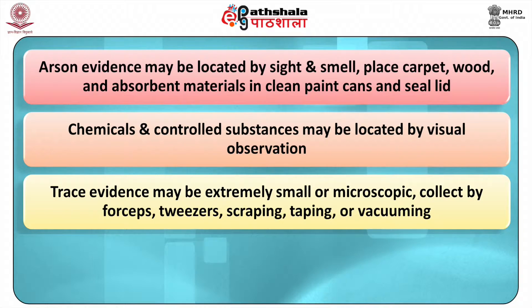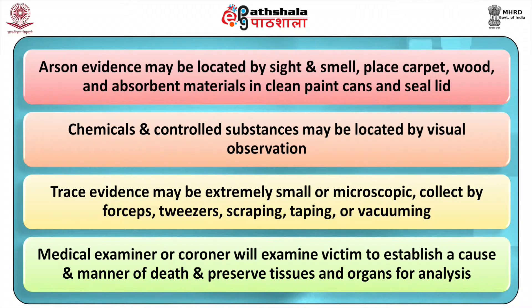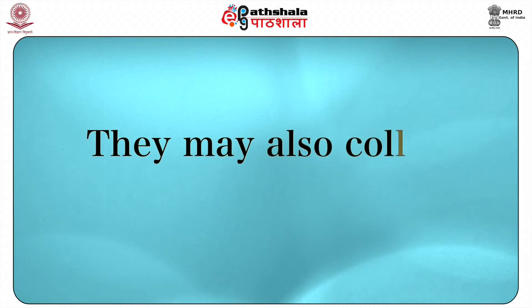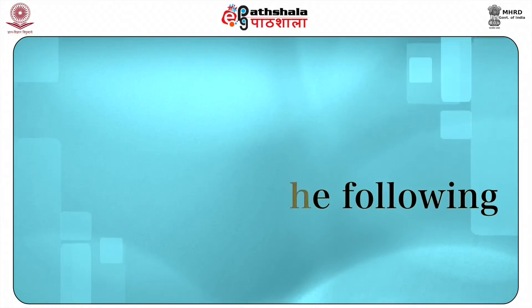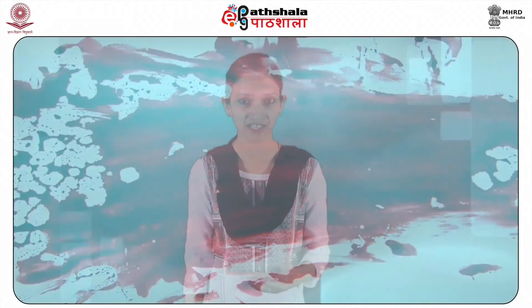Document and collect questioned and known samples. Work in conjunction with the medical examiner for homicide evidence collection. The medical examiner or coroner will examine the victim to establish cause and manner of death and preserve tissues and organs for analysis. They may also collect some of the following evidences: victim's clothing, fingernail scrappings, body hair, blood, vaginal, anal and oral swabs, bullets or other objects inside the body, and GSR swabs from shooting victims.